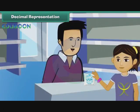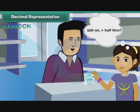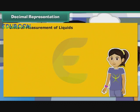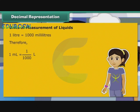When she went to buy it, the person at the booth handed her a 500 ml pouch. Savita was confused — is 500 ml the same as half a litre? To answer this, we must first understand the units used to measure liquids. 1 litre is equal to 1000 millilitres. Therefore, 1 ml is equal to 1 by 1000 litre, that is 0.001 litre.